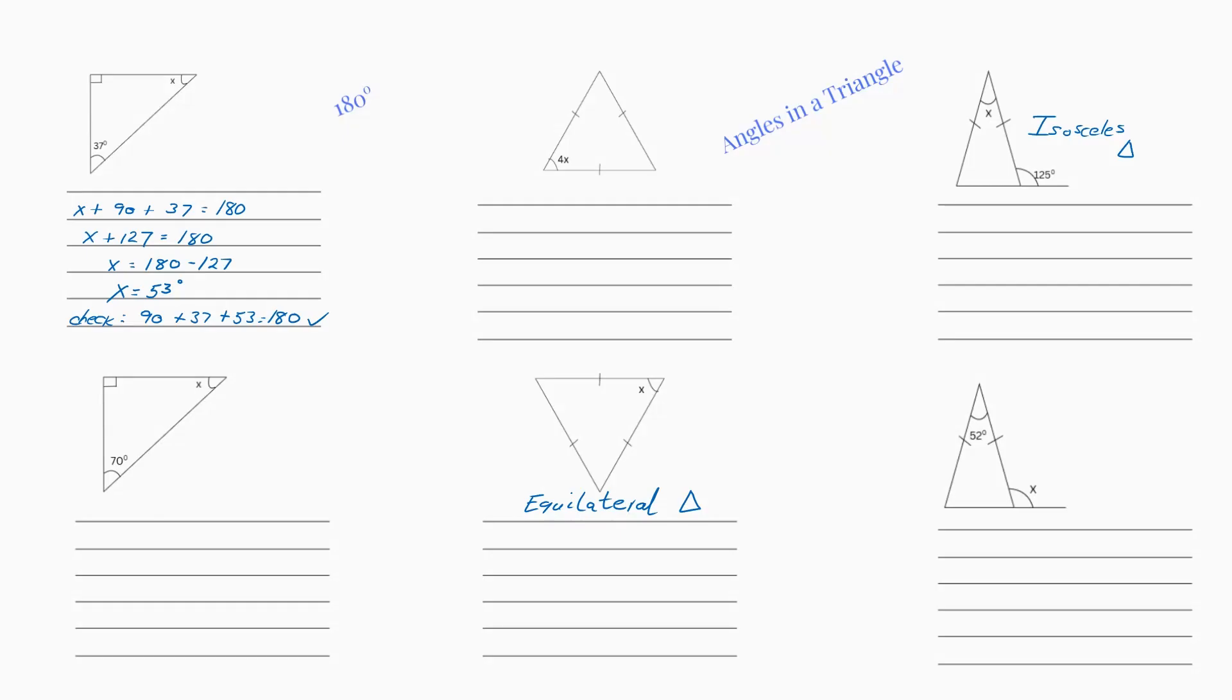So this lesson is showing you how to find angles in a triangle. A key piece of information is all angles in a triangle will always equal 180. So there's no confusion. It can't be 181 and it can't be 170. It has to be 180.